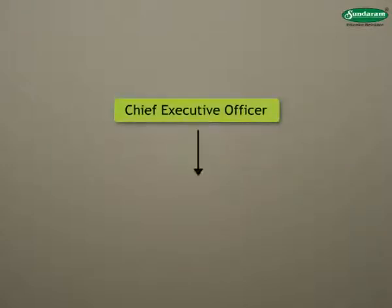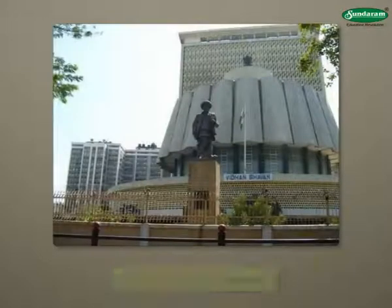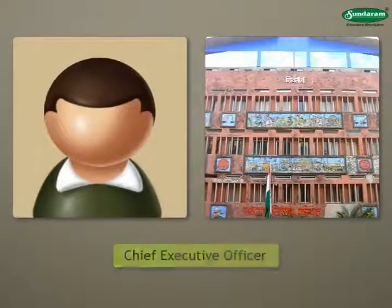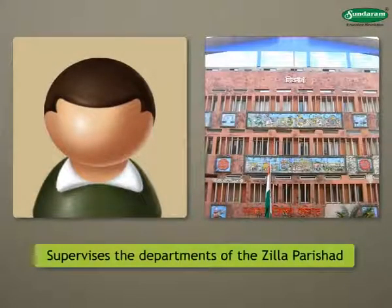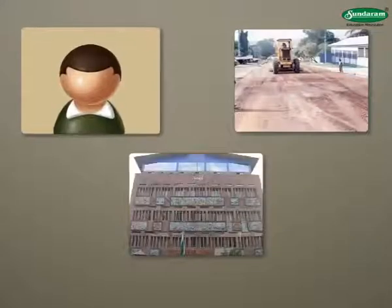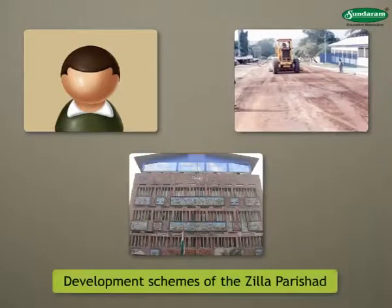The Chief Executive Officer is the Administrative Head of the Zilla Parishad. The State Government appoints a person from the Indian Administrative Service to this post. The Chief Executive Officer supervises all the departments of the Zilla Parishad and is an important link between the members of the Zilla Parishad and its administration.